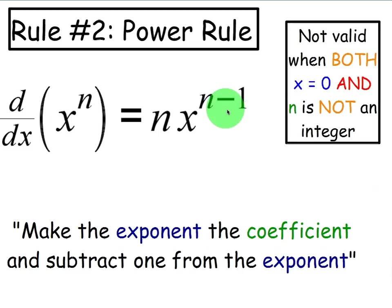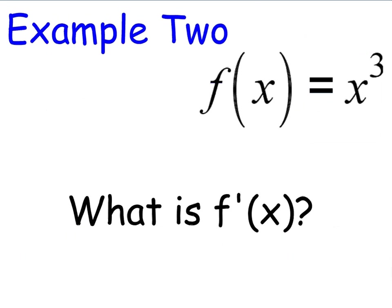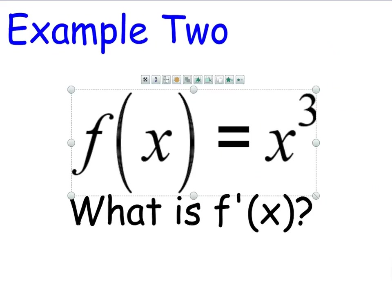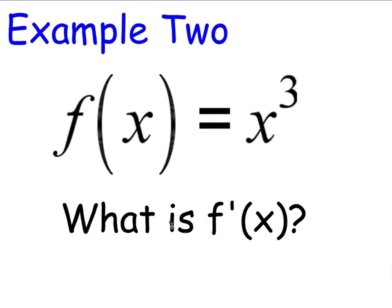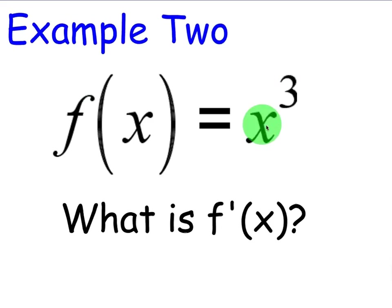Other than that, the power rule is simple to implement and we're going to look at some key examples. For the first example, we have f(x) = x³. The reason you know to use the power rule is because the exponent is a real number and the base is a variable. You can't do it the other way around — if it was 3 to the x power where x is in the exponent, there's a different rule entirely, which we'll learn later.